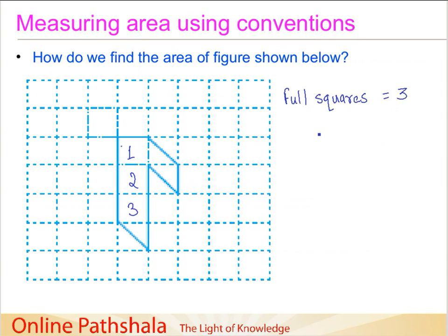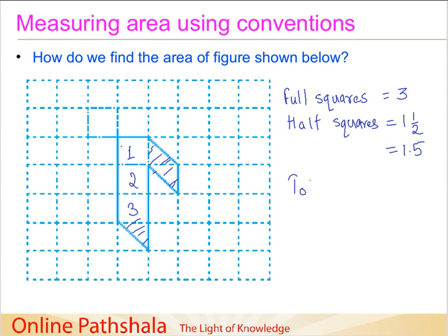Now let us see if we have any half squares. You can see that this is half, the second is half, and the third is half. So half squares are three, and three times half is one and a half, or 1.5 square units. Therefore, the total area covered by this figure is three plus one point five, which is four and a half square units.